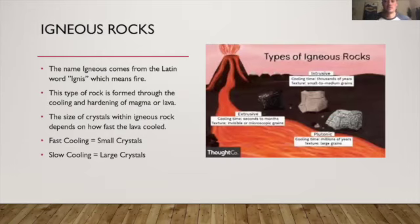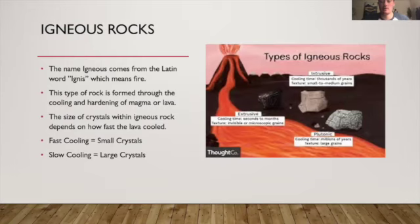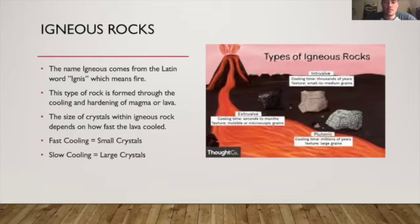The name igneous comes from the Latin word ignis, which means fire. There are different types of igneous rock — we're not going to go over all of them right now, but they are generally categorized by how quickly the lava cooled that created them. Igneous rocks are created from the cooling and hardening of magma or lava, typically after some type of eruption. The size of the crystals you find in igneous rock depends on how fast the lava cooled.